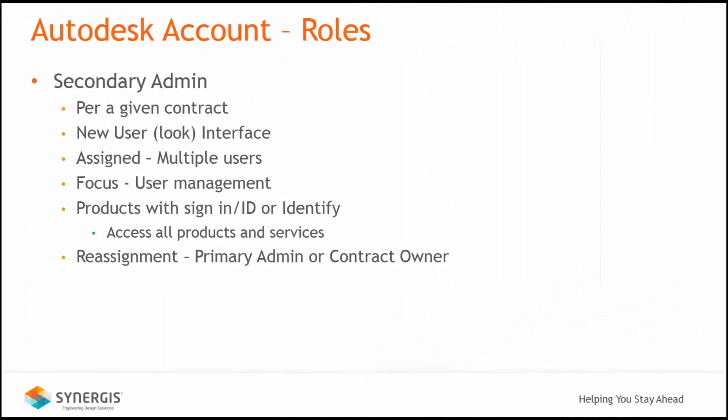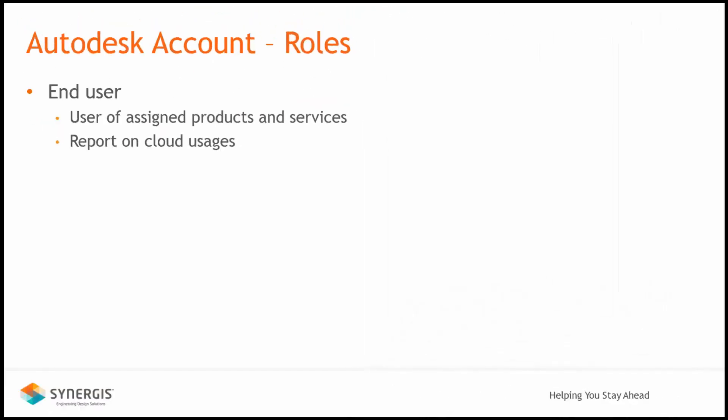The Secondary Admin focuses only on user management and acts the same as the Primary Admin. The key difference is that a Primary Admin can only be assigned to one individual, whereas the Secondary Admin role can be assigned to multiple users. Just like the Primary Admin role, this role is only present under the New User Look interface. Reassignment can be done by individuals assigned to the Primary Admin role or the Contract Owner.